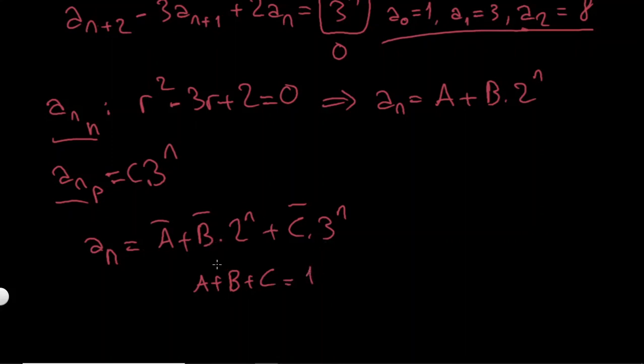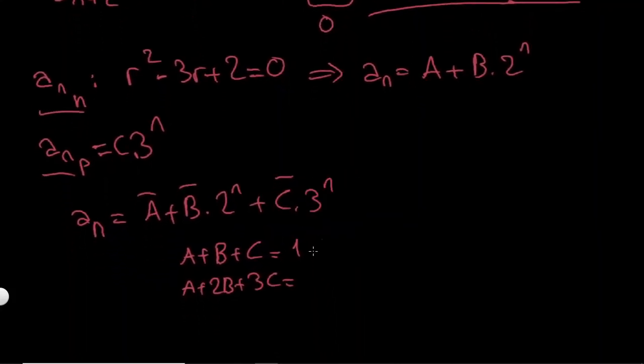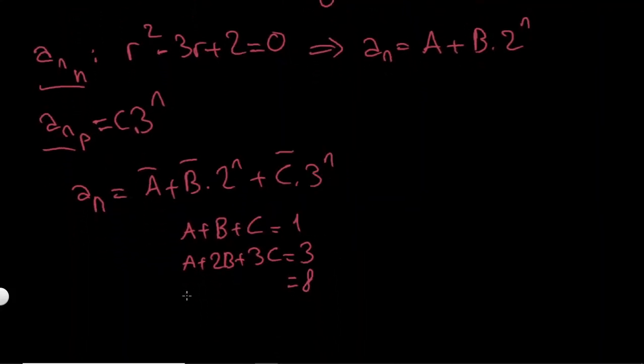If I put n equals 1, A plus 2B plus 3C, this is going to be equal to 3. And the next one is going to be equal to 8. If I put n equals 2, I will have A plus 4B plus 9C.